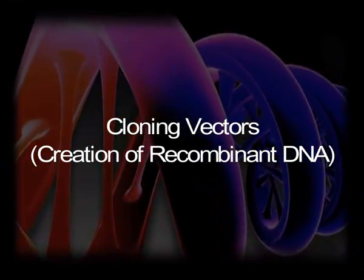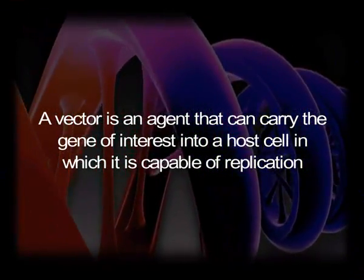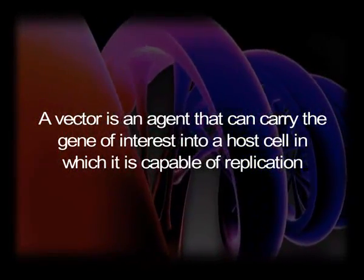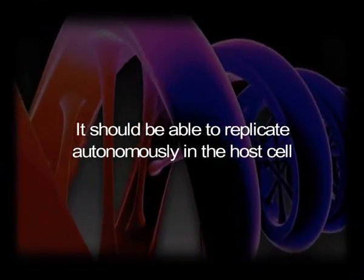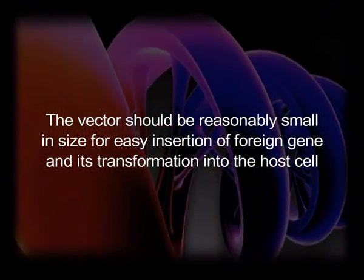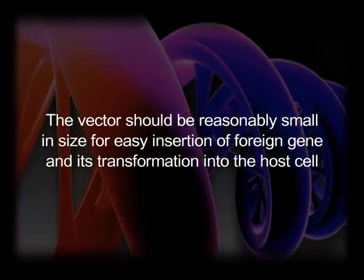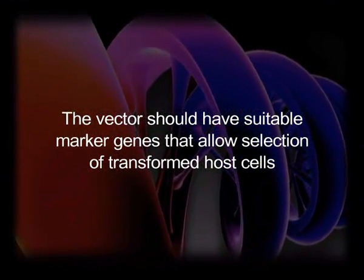After the gene of interest has been isolated, the next step is to insert it into a suitable vector to create a recombinant DNA molecule. A vector is an agent that can carry the gene of interest into a host cell in which it is capable of replication. The characteristic features of an ideal vector are: number one, it should be able to replicate autonomously in the host cell — it must have its own origin of replication; number two, the vector should be reasonably small in size for easy insertion of foreign gene and its transformation into the host cell.